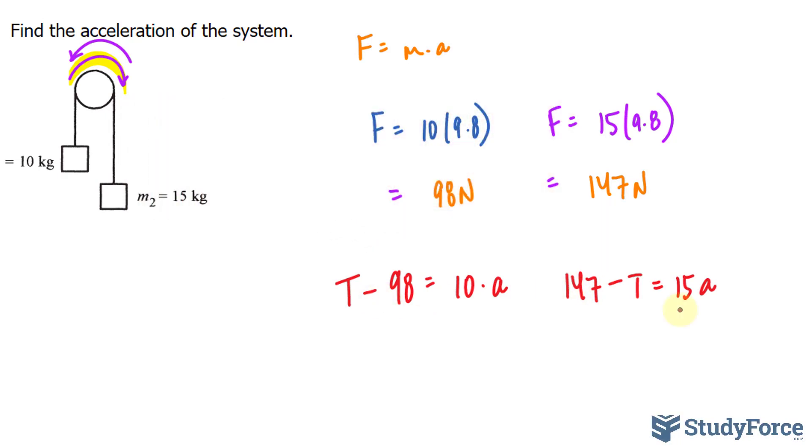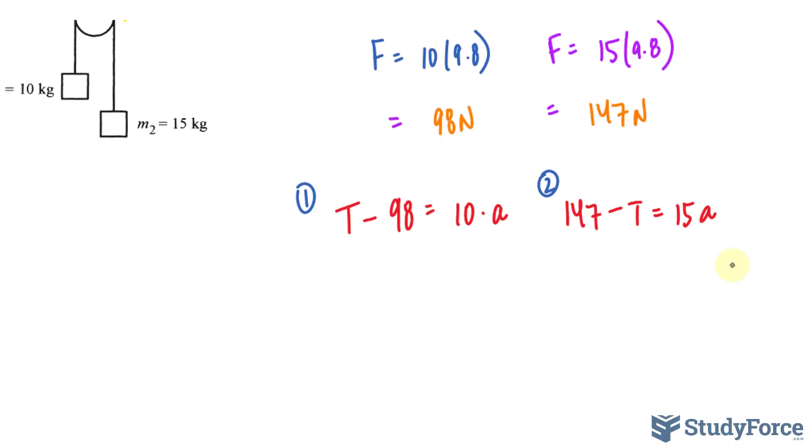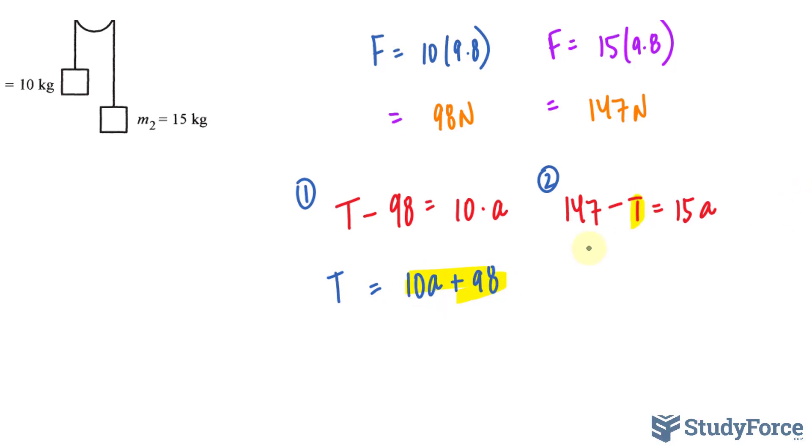Now, we will solve these two equations simultaneously, much the same way you solve a linear system. So let me label this one and two for simplicity's sake, and I'll solve for T here. So I have T is equal to 10A plus 98, and I'll substitute this expression into this T and solve for A. So creating a third equation where I substitute this expression into there. I have 147 minus 10A plus 98 is equal to 15A.